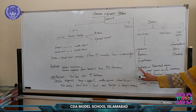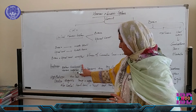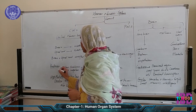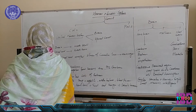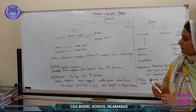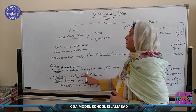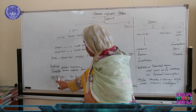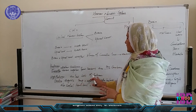The thalamus is located below the cerebrum. Its main function is to receive impulses from all our sensory organs and pass them on to the cerebrum. The hypothalamus is located on the ventral side of the thalamus.